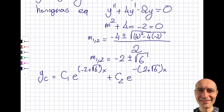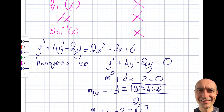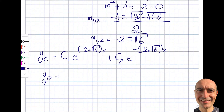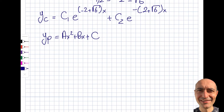Now I find the particular solution. Looking at the right-hand side, 2x² − 3x + 6 is a second-order polynomial, so I try Y_p = A·x² + B·x + C. Taking derivatives: Y_p' = 2Ax + B, and Y_p'' = 2A. I'll substitute these into the original equation to find A, B, and C.